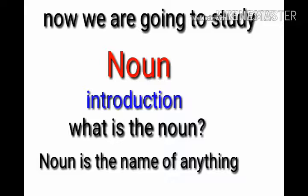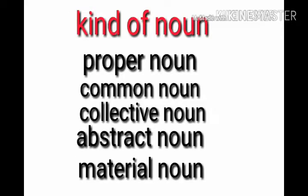The first is noun. Introduction: what is a noun? A noun is the name of anything. Kinds of noun: noun has many kinds. They are proper noun, common noun, collective noun, abstract noun, and material noun.